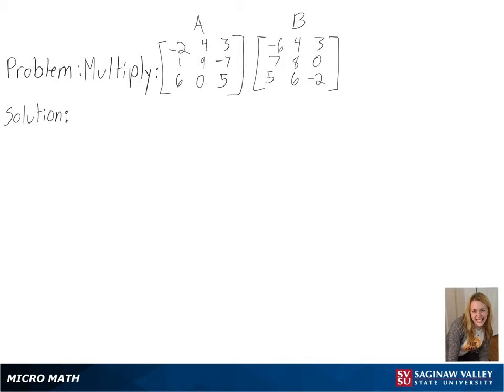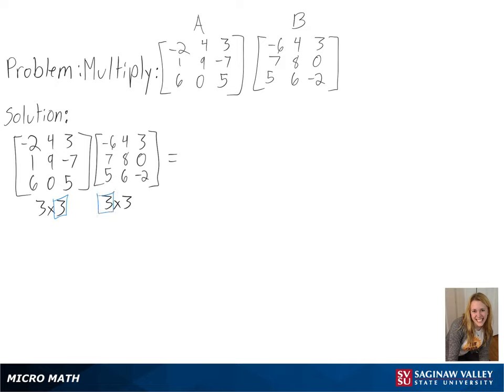Our problem is to multiply matrix A by matrix B. To be able to multiply matrices, the number of columns in the first matrix has to equal the number of rows in the second matrix. We can see here that this is the case since they both have 3.